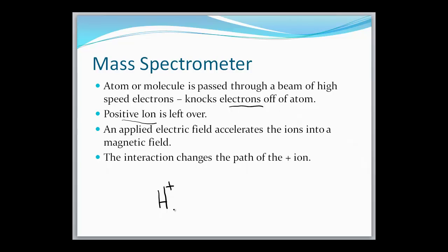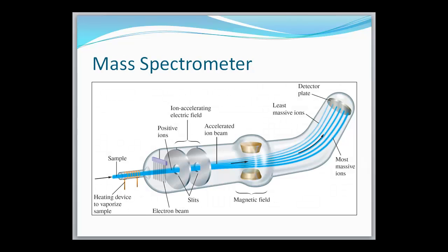Then that positive ion is affected by an applied electric field. In other words, you're putting an electric field on that ion to accelerate it into a magnetic field. And then what happens is that ion interacts with that magnetic field, and what it's going to do is it's going to change the direction of that ion based on its mass. So let's take a look at the diagram. Those atoms are put into the device, and we said that that electron beam then knocks the electrons off of those atoms. The positive ion moves through this accelerator. What happens is it goes into this magnetic field, and as the atom or positive ion interacts with this magnetic field, it's going to bend depending on its mass.